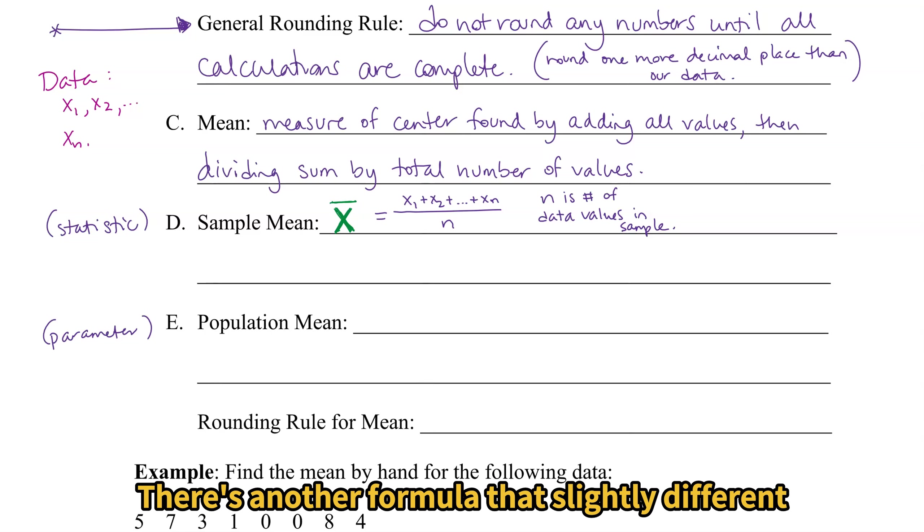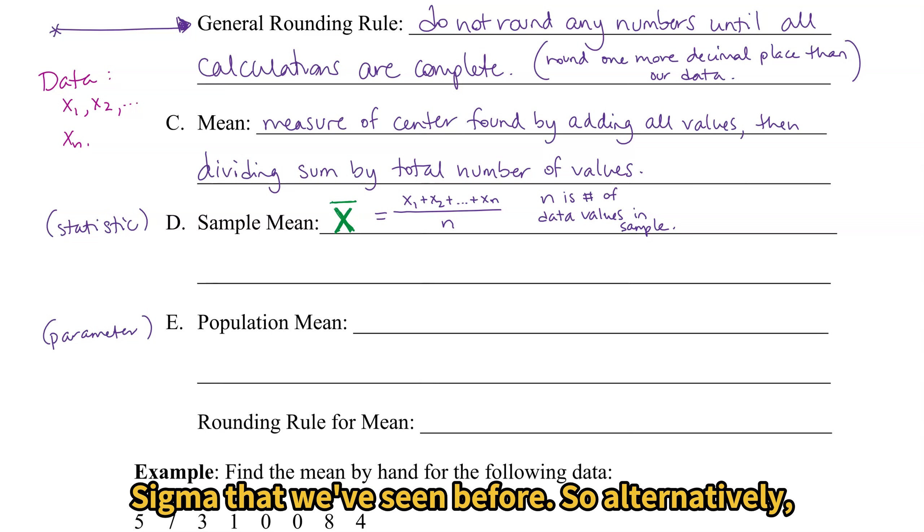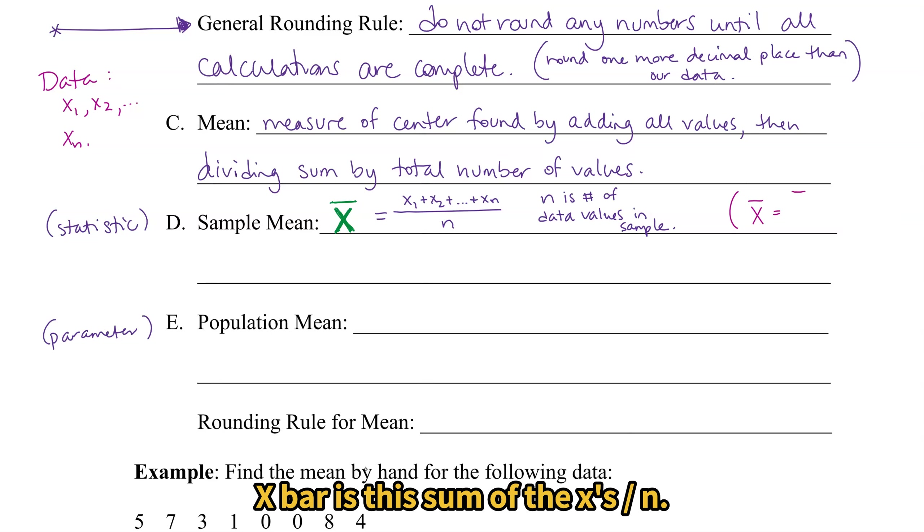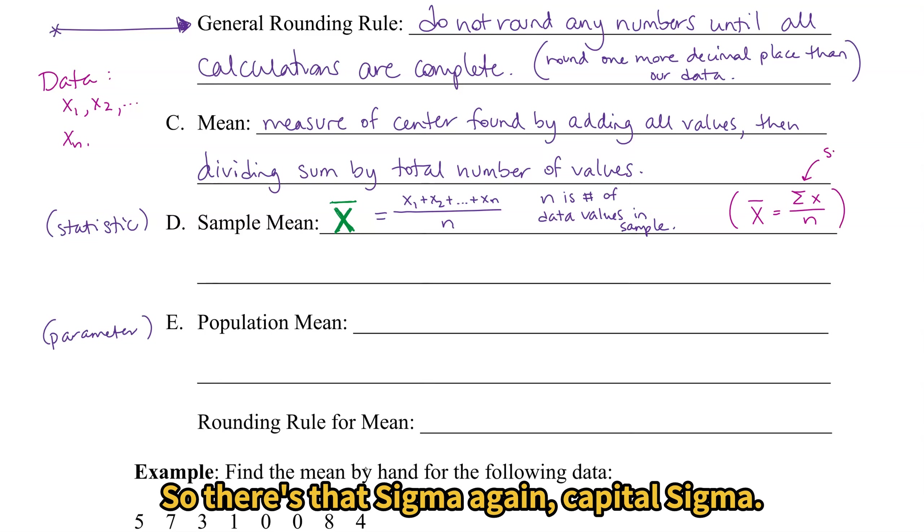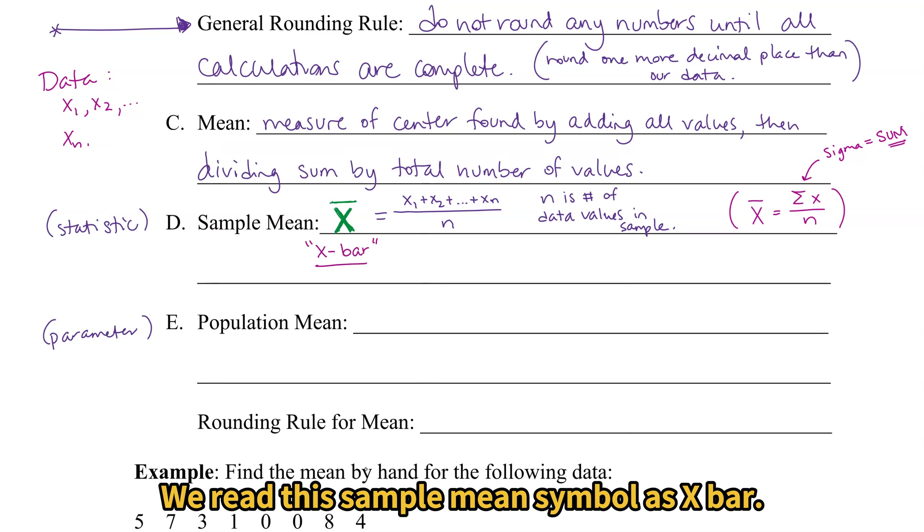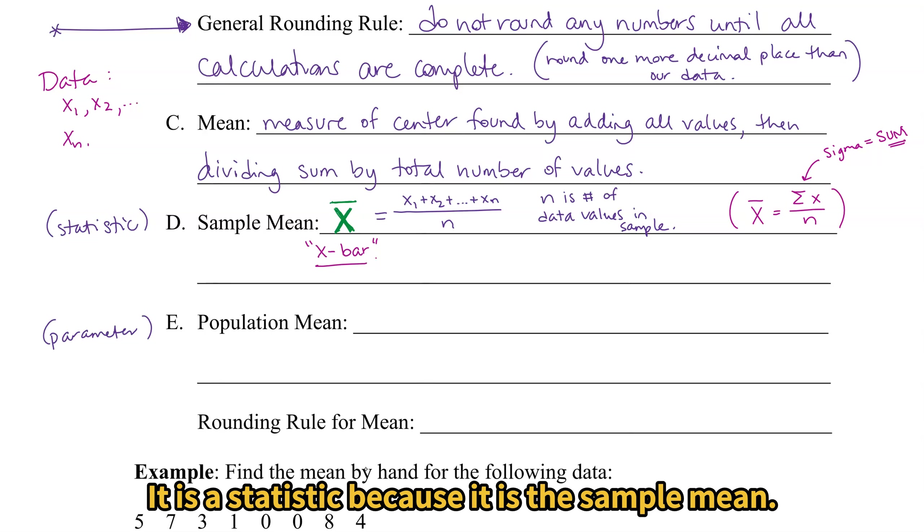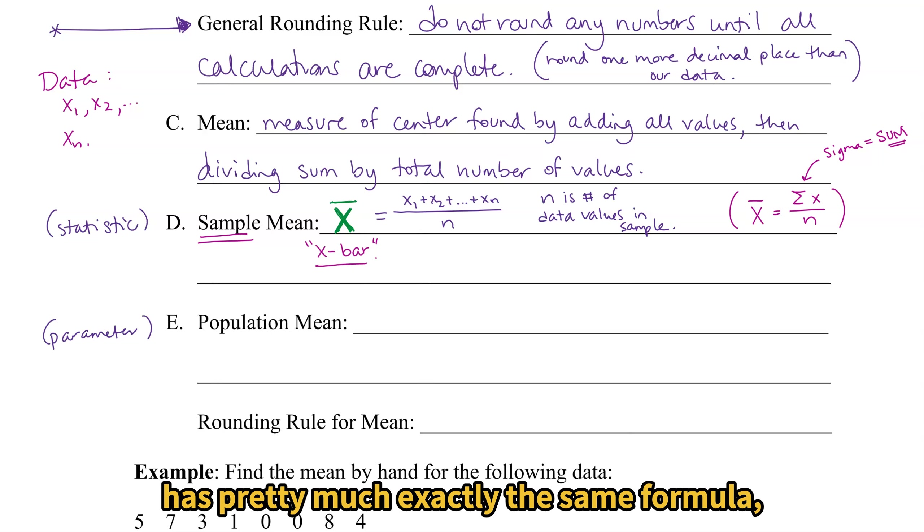There's another formula that's slightly different, but mathematically it means the same thing. And it uses that Greek symbol sigma that we've seen before. So alternatively, x bar is the sum of the x's divided by n. So there's that sigma again. Capital sigma that means sum in mathematics. We read this sample mean symbol as x bar. So if we see the x with the bar on top, we just call it x bar. It is a statistic because it is the sample mean.